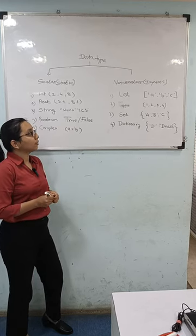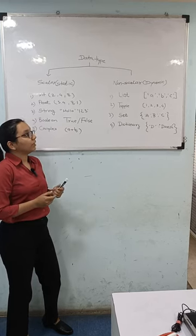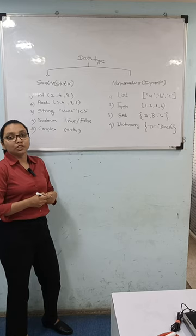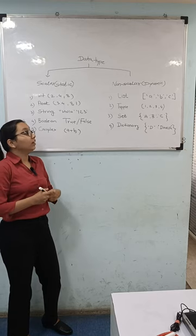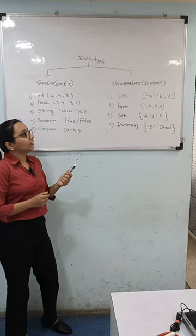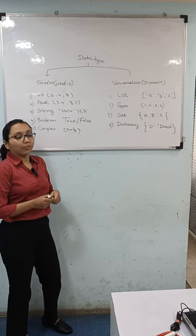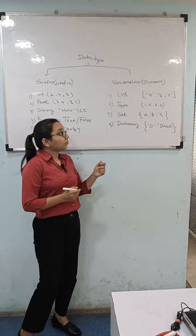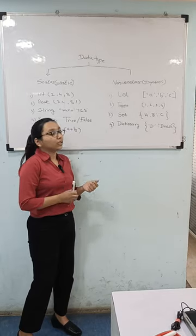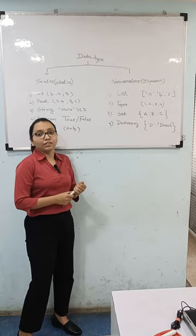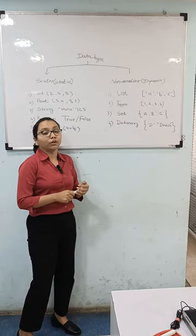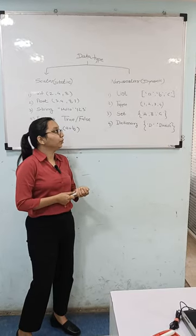The second is Tuple. Tuple is ordered and unchangeable. It is declared in round brackets. Once a tuple is created, we cannot change its value because it is immutable.